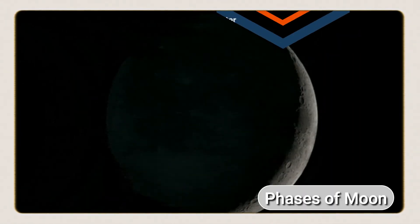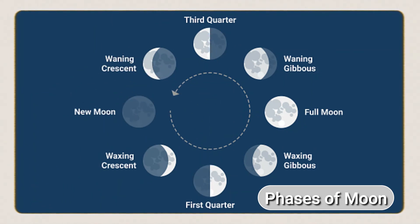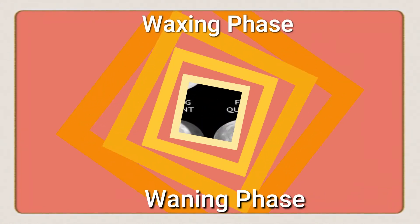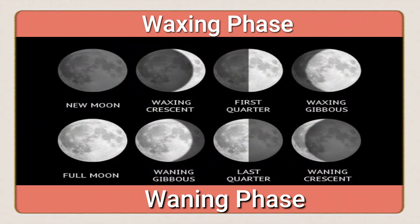It takes nearly one month to complete one cycle, and in one cycle we can see two different phases: the waxing phase and the waning phase. Altogether, we see eight different shapes of the moon.